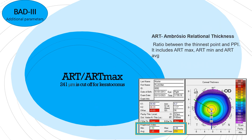ARTmax — Ambrósio Relational Thickness maximum. Remember, the cutoff point is 241 micrometers. Anything above 241 is suggestive of keratoconus. In this example it is slightly less than 241 — actually 219 — so it is in a suspicious range.